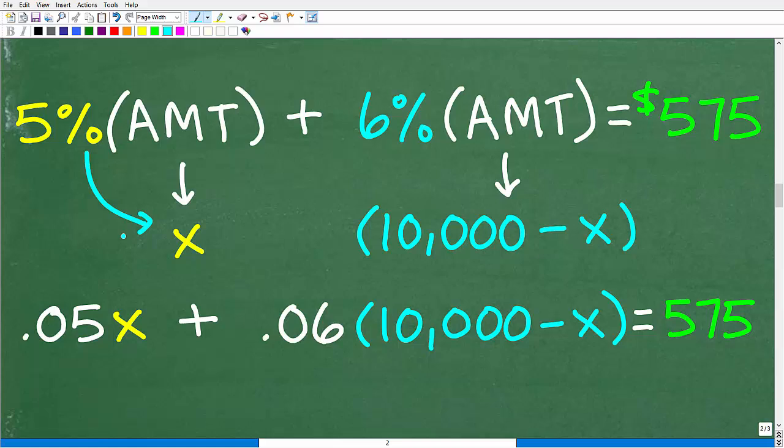So this is kind of the logic here. And look right here. We have this lovely equation symbol, this equal sign. So we have an equation. All right, so let's put this all together. So this is going to look like this. Okay, so 5% of this amount, the amount invested at 5%, plus 6% times the amount invested at 6%, which, of course, is 10,000 minus X, is going to equal to 575.